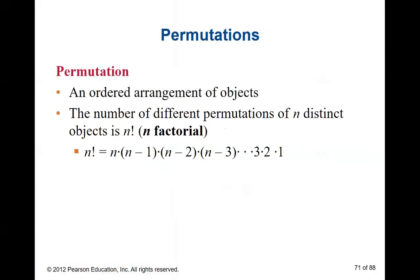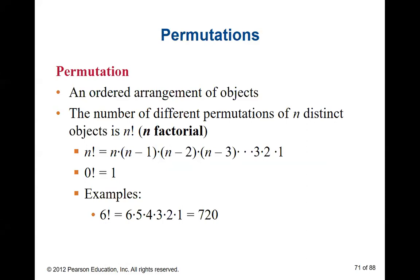The number of different permutations of some number of distinct objects uses the factorial sign — that's not just N, it's not just a really excited N. It means whatever that number is, if it's five, you start at that number and count backwards to one, multiplying them all together. By definition, zero factorial equals one.